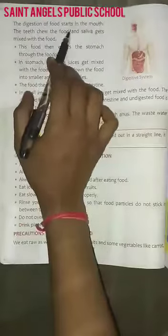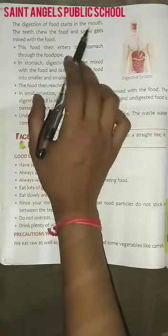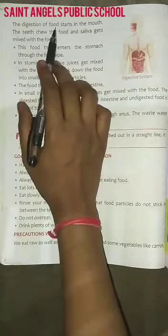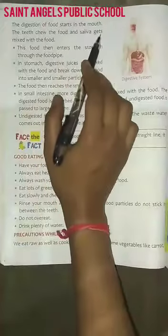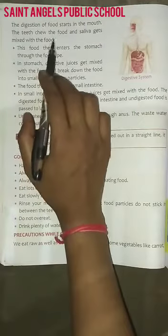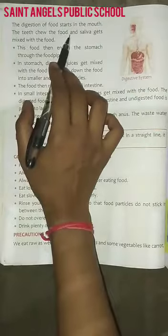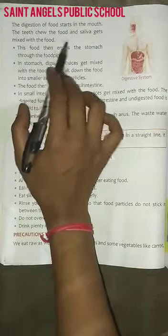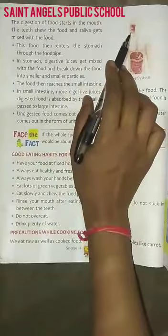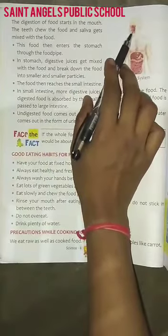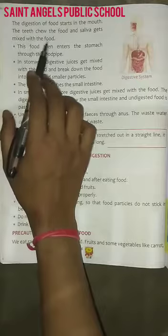The digestion of food starts in the mouth. Bhojan ka pachan mouth meh shurru ho jata hai. The teeth chew the food and saliva gets mixed with the food. Daat bhojan ko chabaate hai aur bhojan meh saliva mix kar djeti hai — saliva aapke mouth meh laar hoti hai jo khanne meh mil jaati hai.